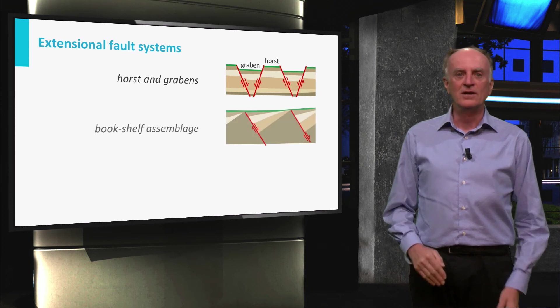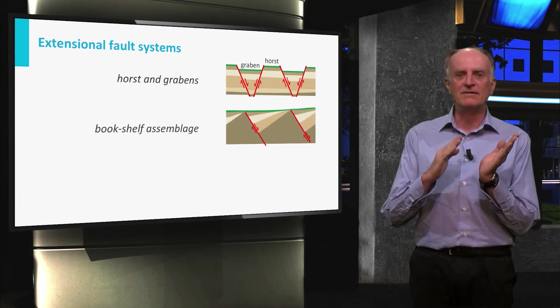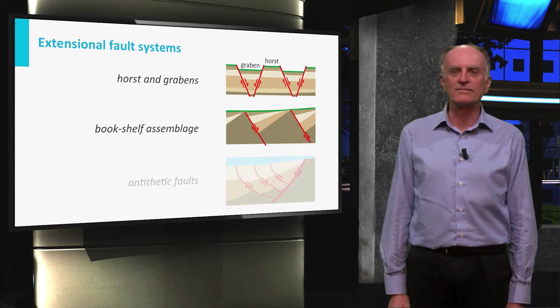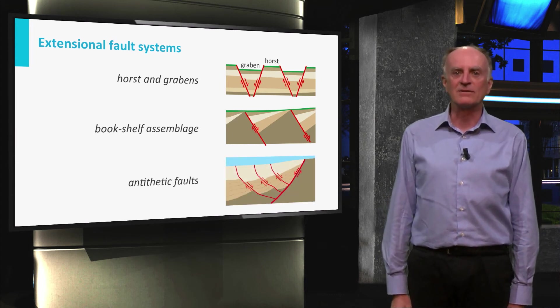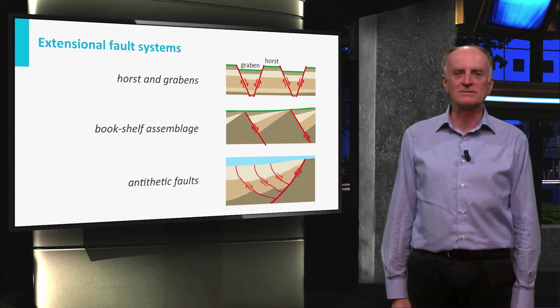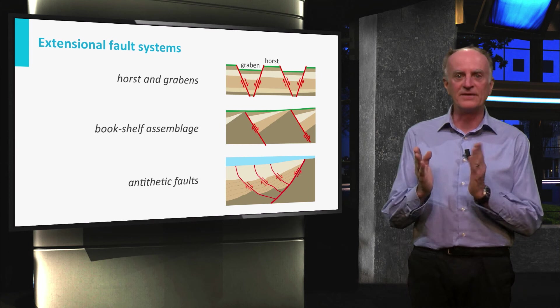Alternately, normal faults can have all the same dip direction and form a so-called bookshelf assemblage. In the third variation, faults develop on the hanging wall of a fault block gliding downwards along a major listric fault. These are called antithetic faults.